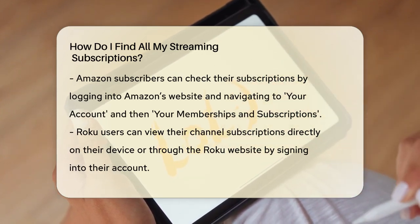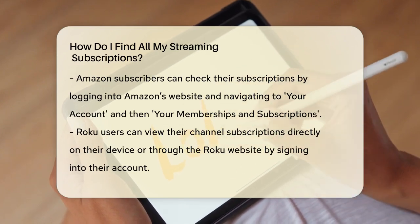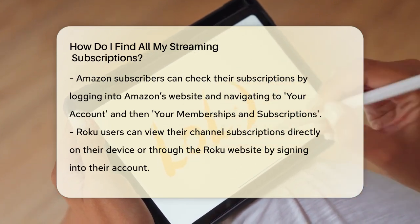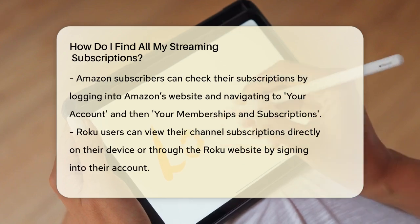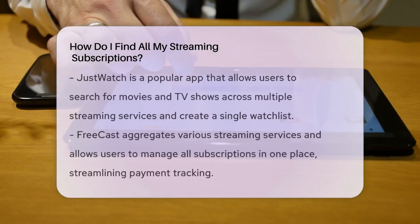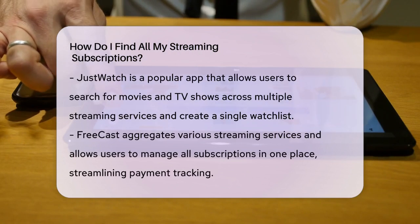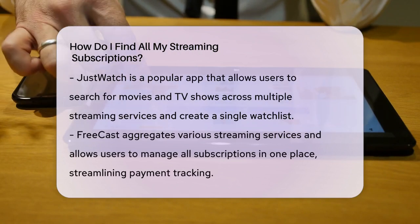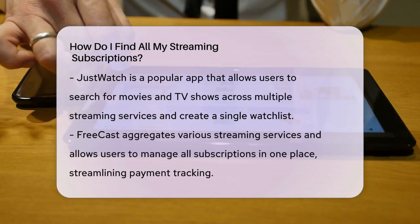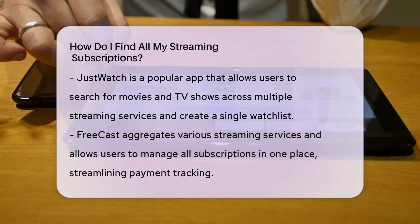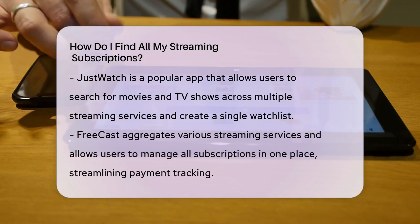Now let's talk about managing all these subscriptions in one place. There are some great apps that can help you do just that. One popular option is JustWatch. This app lets you search for movies, TV shows, and sports across multiple streaming services like Netflix, Amazon Prime, Disney Plus, and more. You can create a single watch list and get recommendations based on what you've watched before.